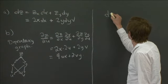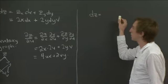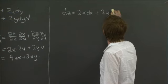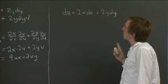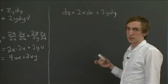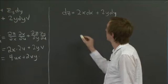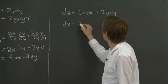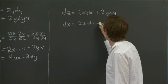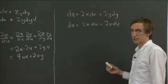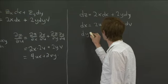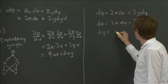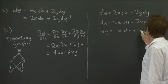So we already saw, let me just repeat over here. We already saw that dz is 2x dx plus 2y dy. Now we want to use the fact that x is itself a function of u and v. So that's what we need to do now. So that tells us that dx is 2u du minus 2v dv in the same way.